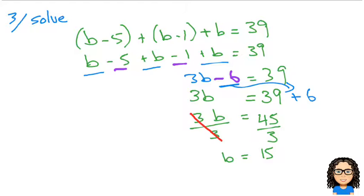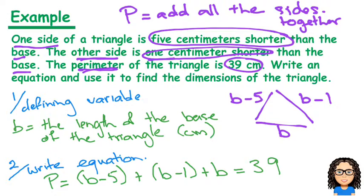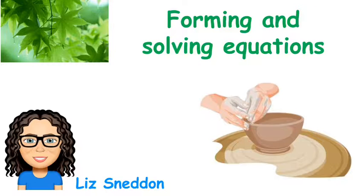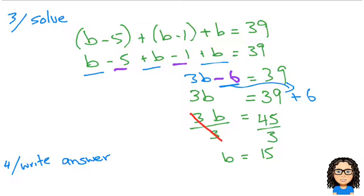The last thing I need to do, step 4, is to write the answer. Let's think about what we've found. Going back to my definition, b is the length of the base of the triangle, so the base is 15 centimeters long.